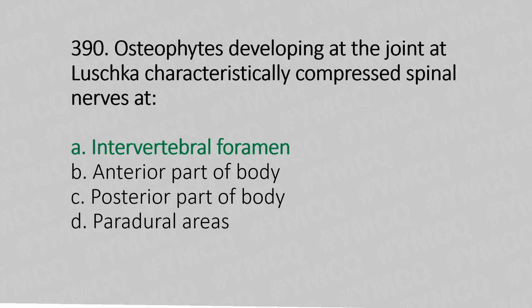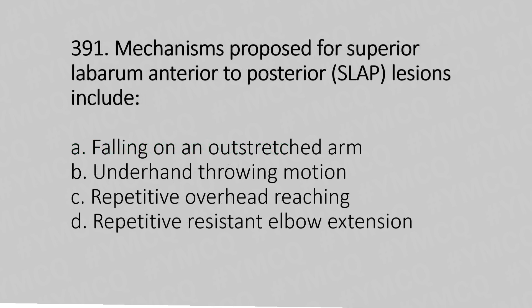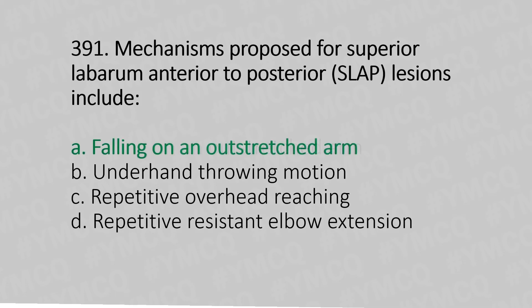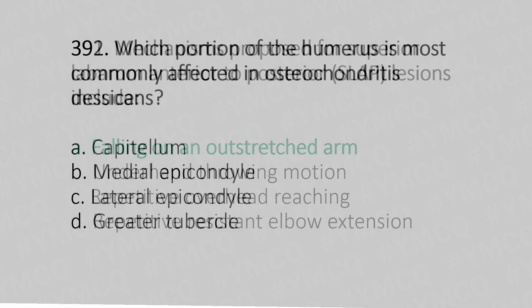Question 391: The mechanism producing a superior labrum anterior to posterior (SLAP) lesion includes: Option A: falling on an outstretched arm. Option B: underhand throwing motion. Option C: repetitive overhead reaching. Option D: repetitive resisted elbow extension. The answer is Option A: falling on an outstretched arm.